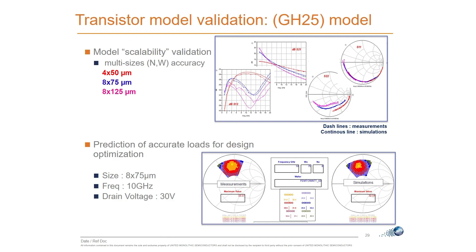Another validation point is comparing S-parameters for different transistor topologies. For the power and nonlinear model, one of the best ways to verify model quality is the load-pull comparison — measuring power, power-added efficiency, or linearity. If the model correctly captures the evolution of drain current versus input power, it can accurately estimate and optimize the power-added efficiency of the transistor during the design phase.